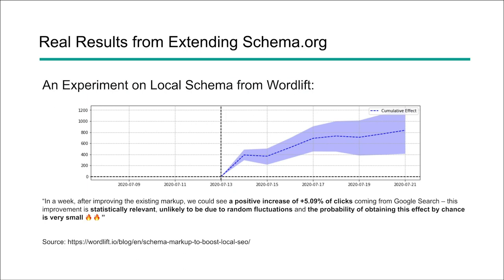I want to share some real results from extending your schema. This is an experiment done by WordLift using the local markup. As a result of extending their markup, they were able to see a 5% increase in the number of clicks coming from Google Search. To make sure this was actually relevant and not just by chance, they used Causal Impact, which helped reduce some of the fluctuations and get a positive probability associated with this change. The graph from Causal Impact shows a positive change that was statistically significant — making this change for this specific site had a positive impact. Please check out the link which I'll provide below.